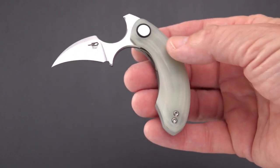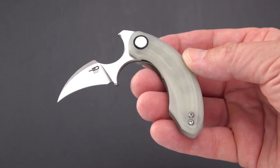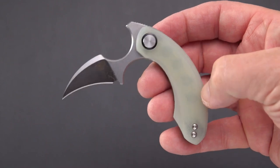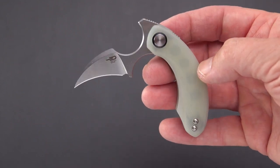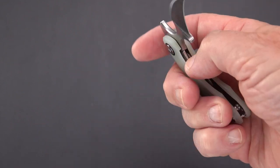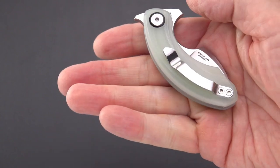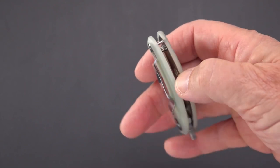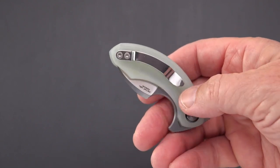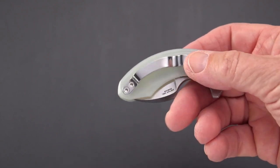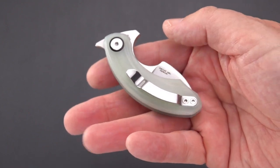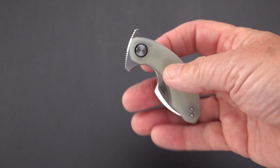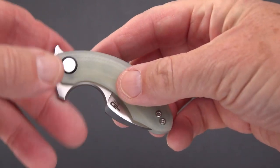I happen to like this one in natural jade G10. You can see the lightning holes right through the scale. The cool thing about this little guy is that it carries conveniently in the fifth pocket of your jeans or your 5.11 pants, your shirt pocket - it looks like absolutely nothing.